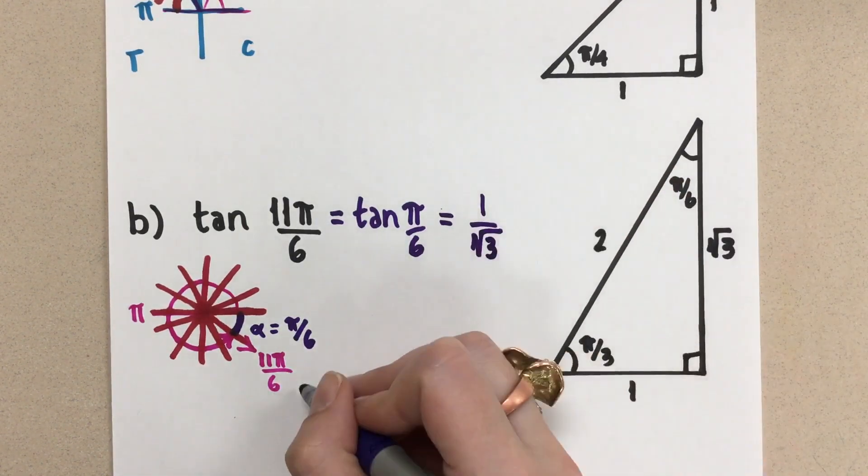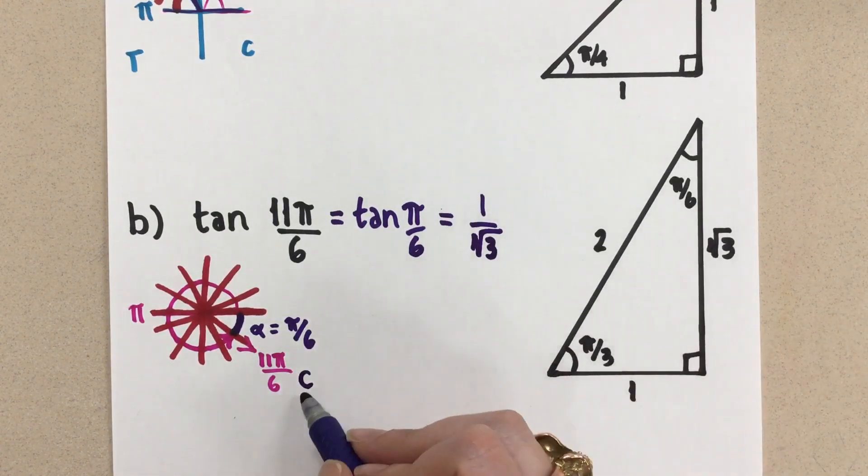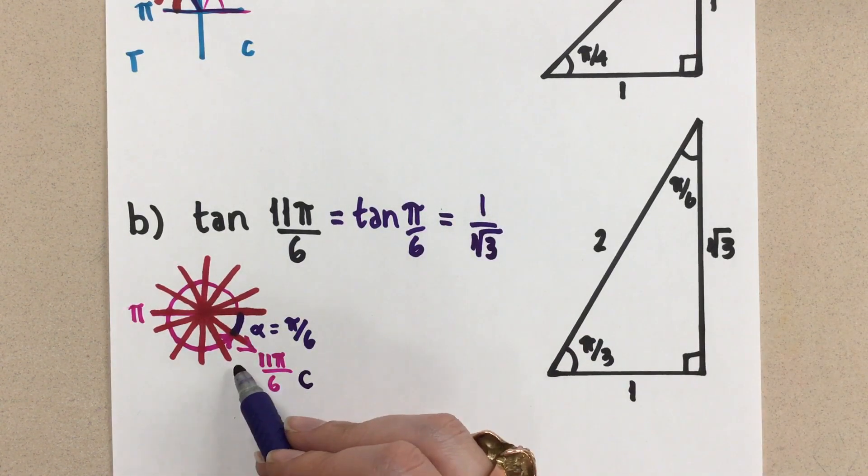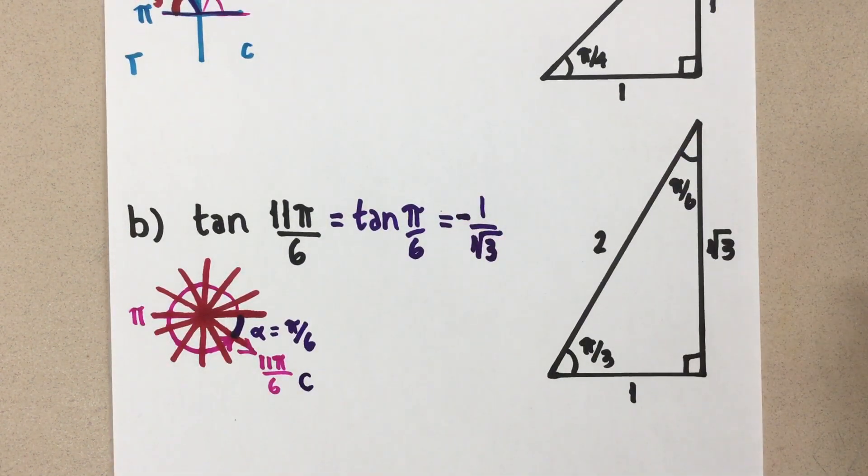And if we look at the cast rule, in the fourth quadrant, only cosine is positive. So tangent is negative. I'm going to add my negative in here. And there's the exact value for tangent of 11π over 6.